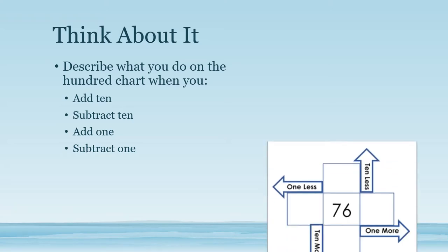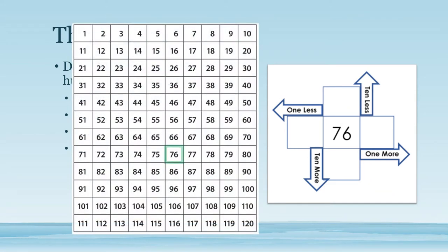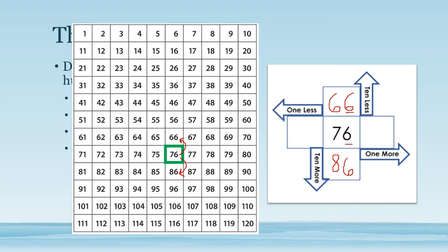Let's picture the number 76 on the 100 chart. To find 10 less, the number will be in the same column — we just have to go right above our number. So 10 less than 76 is 66. To find 10 more, the number will be in the same column — we just have to go right below the number. So 10 more than 76 is 86. You might have noticed that the digit in the ones place stays the same, but the digit in the tens place is changing.